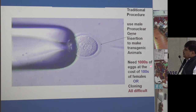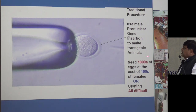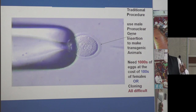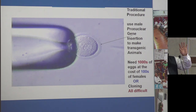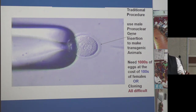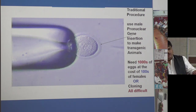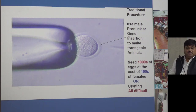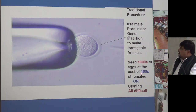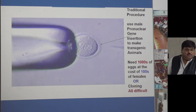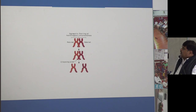Traditional transgenesis needs thousands of eggs at the cost of hundreds of females. When we manipulate eggs, 80-90% will die and only 10% survive; then you need a surrogate mother who is falsely pregnant to transfer the eggs. For large animals like buffalo, you get only one or two eggs per animal — making it next to impossible. So we started thinking of an alternative approach.